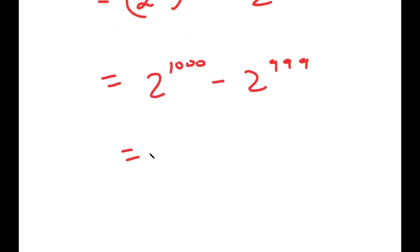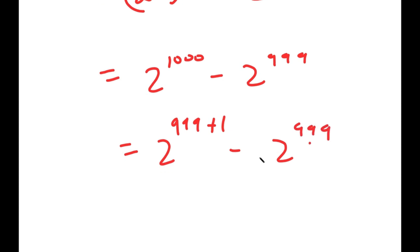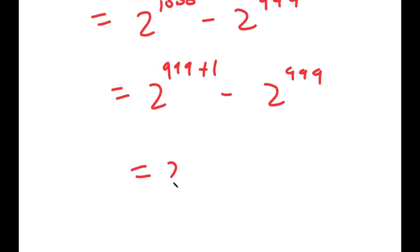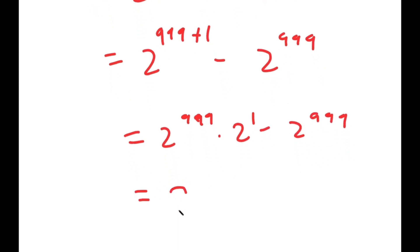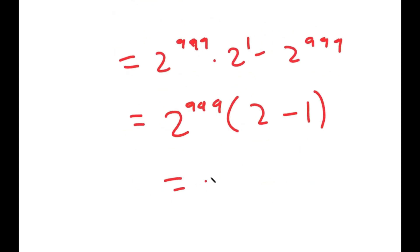Now to solve this, I'm going to write 2 to the power of 1000 as 2 to the power of 999 plus 1. So I get 2 to the power of 999 times 2 to the power of 1, minus 2 to the power of 999, which is equal to 2 to the power of 999 times (2 minus 1), which is equal to 2 to the power of 999.